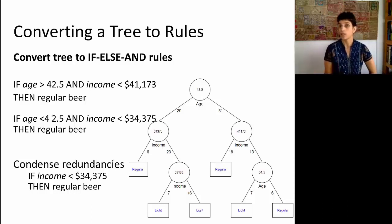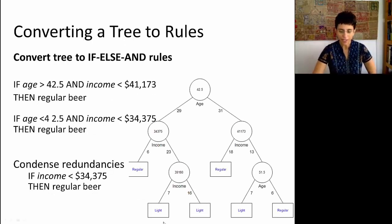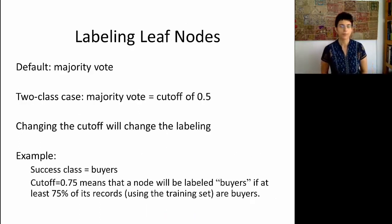Now, if someone asks you, hey, why did you serve me regular beer? It's quite easy to go back to the rule and say, oh, because your income is lower than $34,000. Now, you might have noticed on the previous tree, and let me flip back for a minute, that some of the labels here are actually duplicate. We see that income down here is split into two subgroups, but we have two labels that are light. And in general, how do I determine the labels on the terminal nodes?